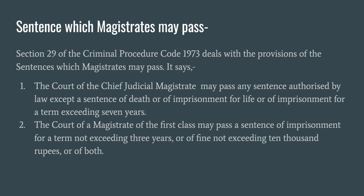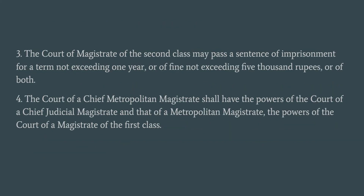Third point: the court of a magistrate of the second class may pass a sentence of imprisonment. The difference between the first class and second class magistrate is: the first class magistrate may pass imprisonment not exceeding three years, but in the second class it is one year. The fine amount for the first class magistrate is not exceeding ten thousand rupees, but for the second class magistrate it is not exceeding five thousand rupees, or both.